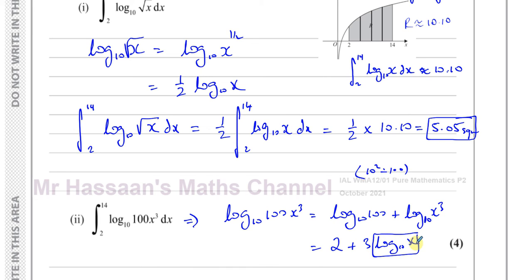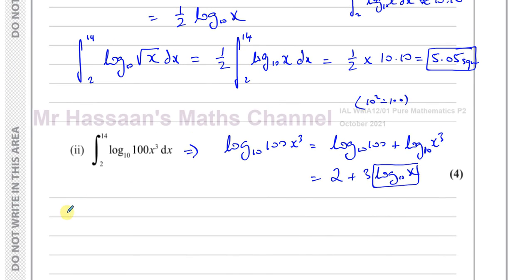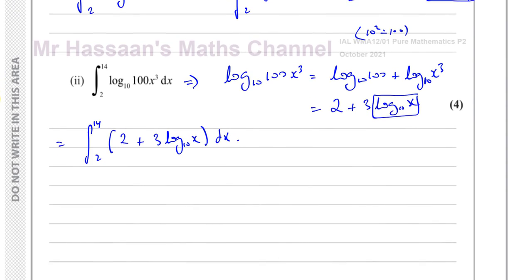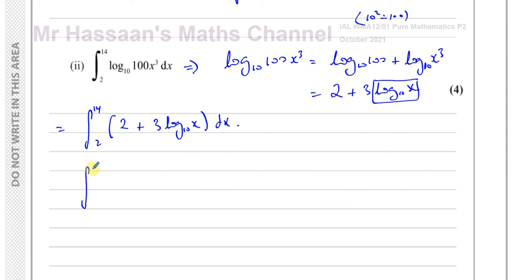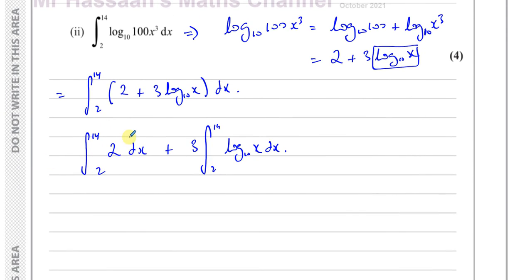Using the power law, log base 10 of x cubed equals 3 log base 10 of x. So the integral from 2 to 14 of log base 10 of 100x³ dx is equivalent to the integral from 2 to 14 of 2 plus 3 log base 10 of x dx. I can split this into two separate integrals: the integral of 2 with respect to x, plus 3 times the integral of log base 10 of x — which I already know is 10.10.